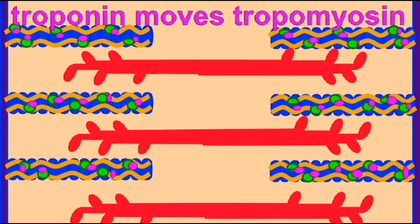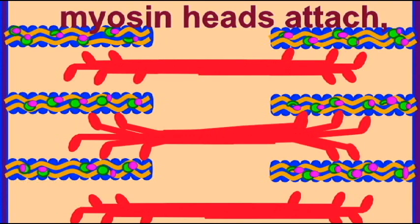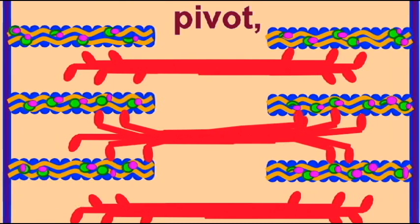The myosin heads can now attach, pivot towards the center of the sarcomere, detach after binding ATP, and return to the ready position.